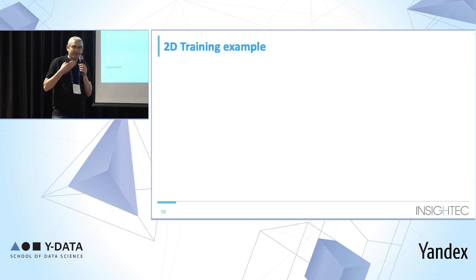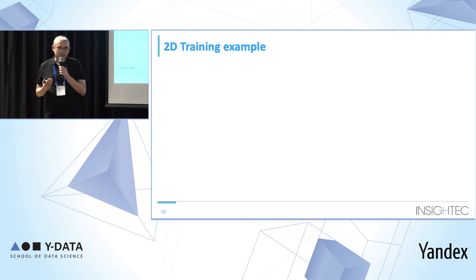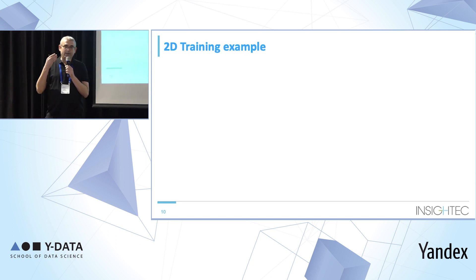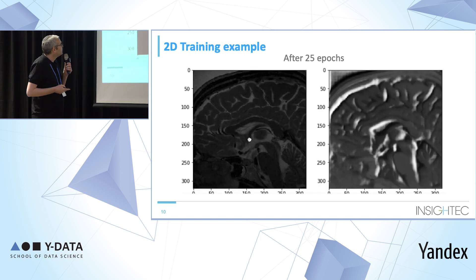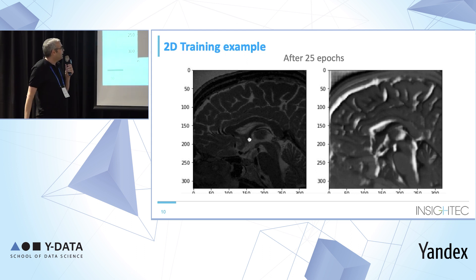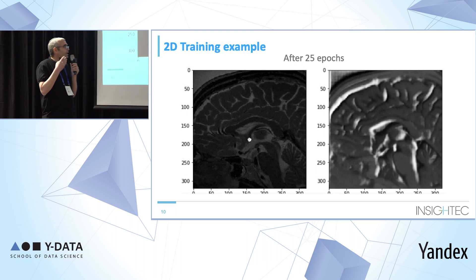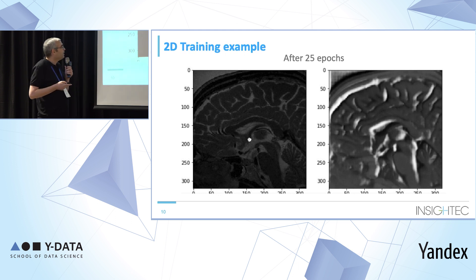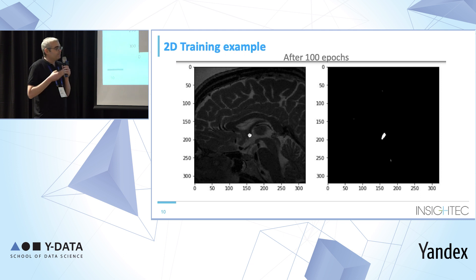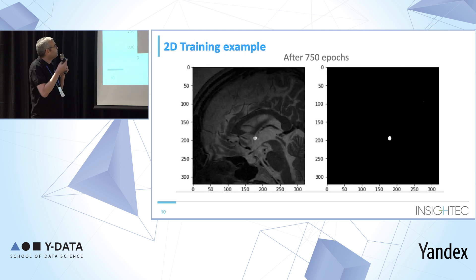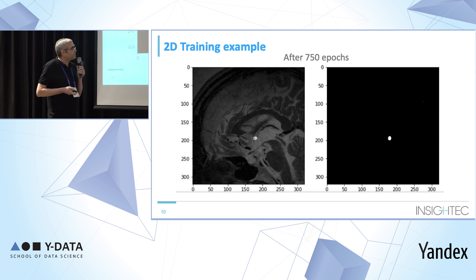This example was done on the 2D case. I took the slices I know the landmarks are on. In the left image you can see the slice, and on it I placed the label at its center. After several epochs, there are many regions firing as suspected heatmap locations. But as we continue to train, the non-relevant regions decay, until after 750 epochs we get quite similar results to the label image.